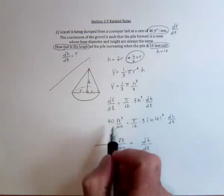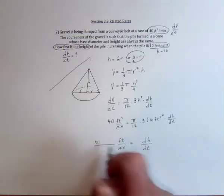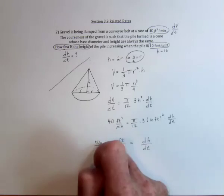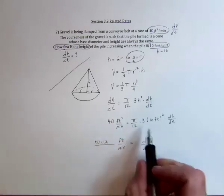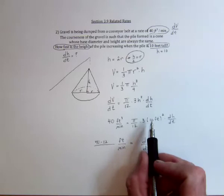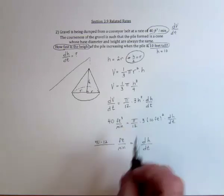Now I just need to move the numbers over. There was already a 40. I'm going to need to multiply by 12, and I'm going to need to divide by 300π.